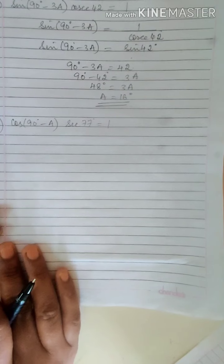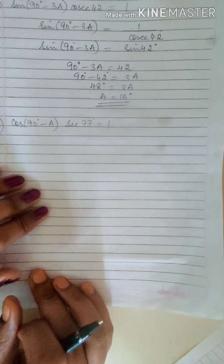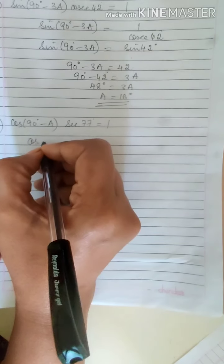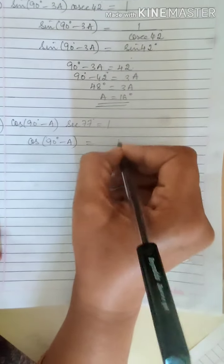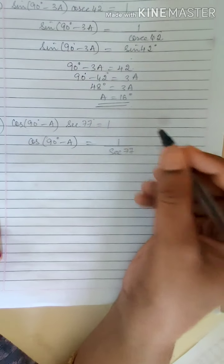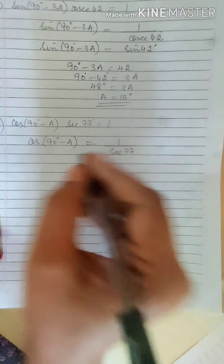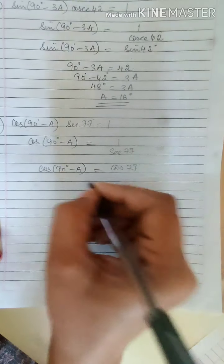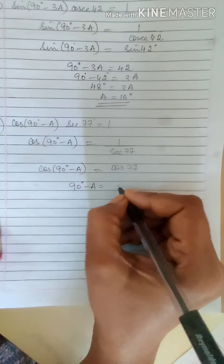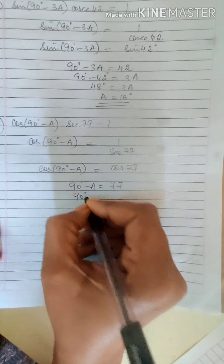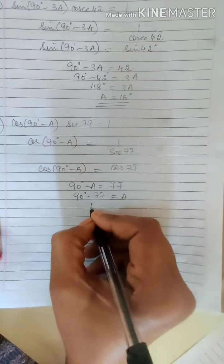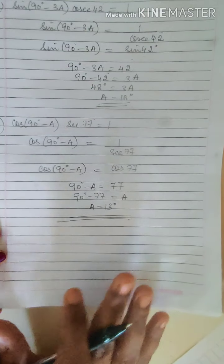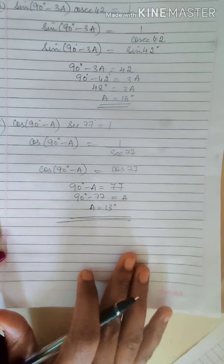Now the last sum: cos(90 minus A) · secant 77 = 1. So cos(90 minus A) = 1 / secant 77 = cos 77. Therefore 90 minus A = 77, and A = 90 minus 77 = 13°. So here we complete the chapter on complementary angles. Thank you children.